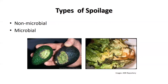The avocado pictured here has damage that was induced by an animal. This would be an example of non-microbial spoilage. The lettuce pictured is a bit slimy and degraded and was spoiled due to the growth of microorganisms.